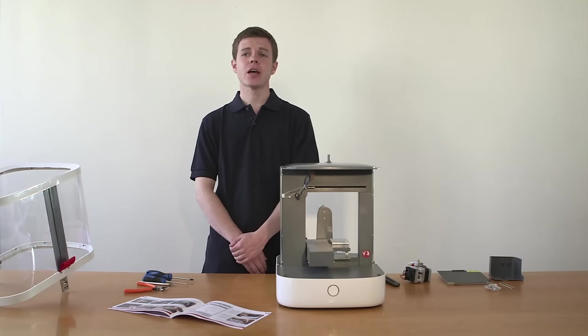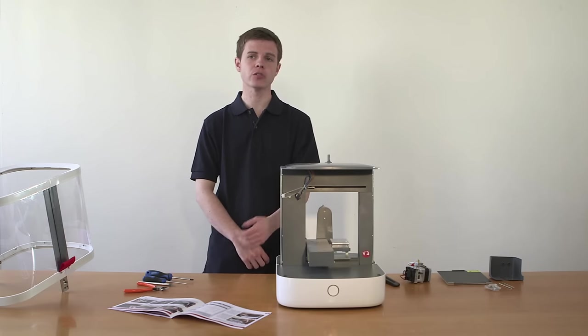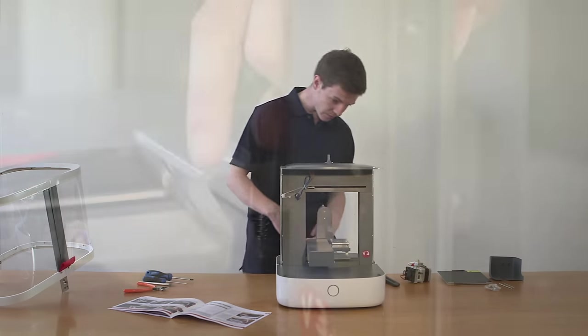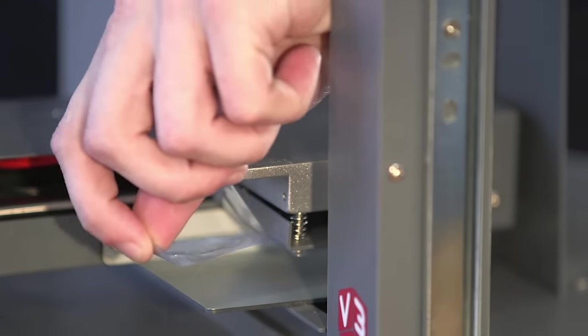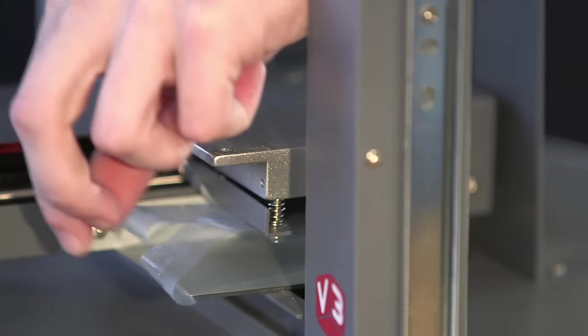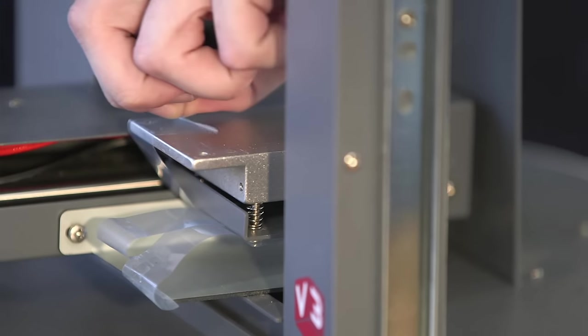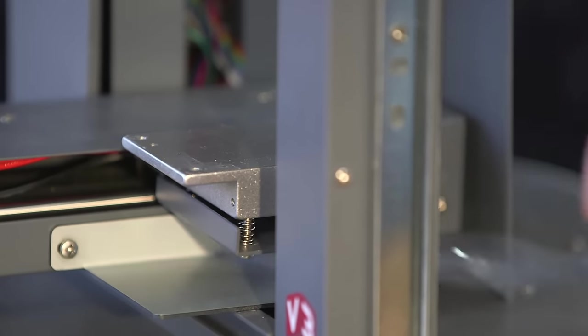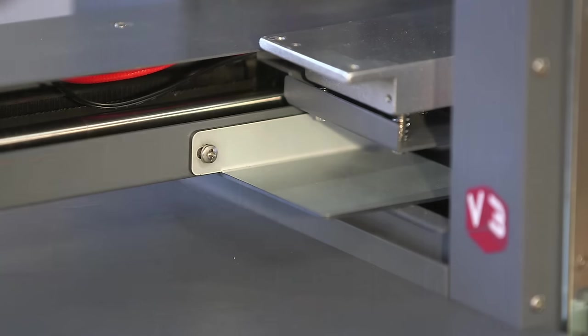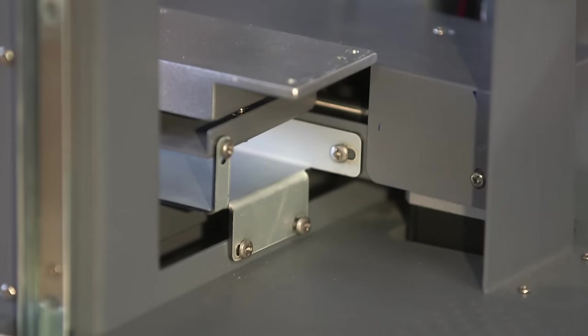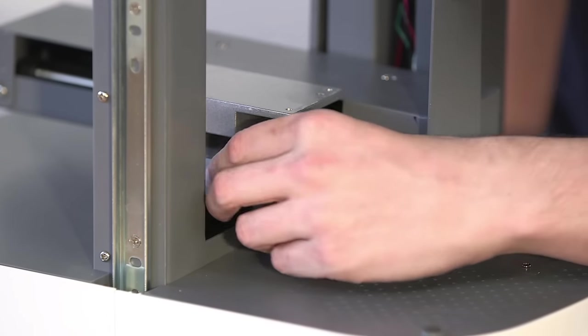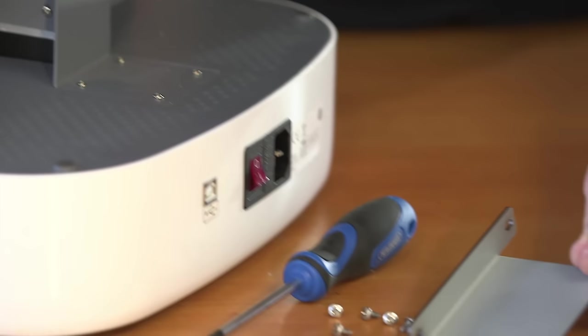For added protection against damage during shipping, the main moving parts are locked into place with a bracket, which we're now going to remove. First, peel the adhesive tape off the base mounting unit. Now, take out the five screws from the shipping bracket and remove it. You may want to keep the bracket and screws somewhere handy in case you need to transport the printer.